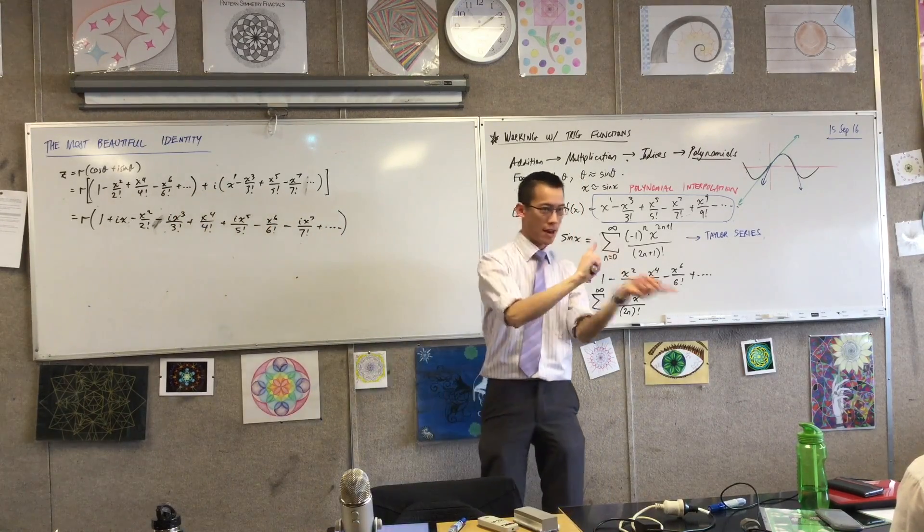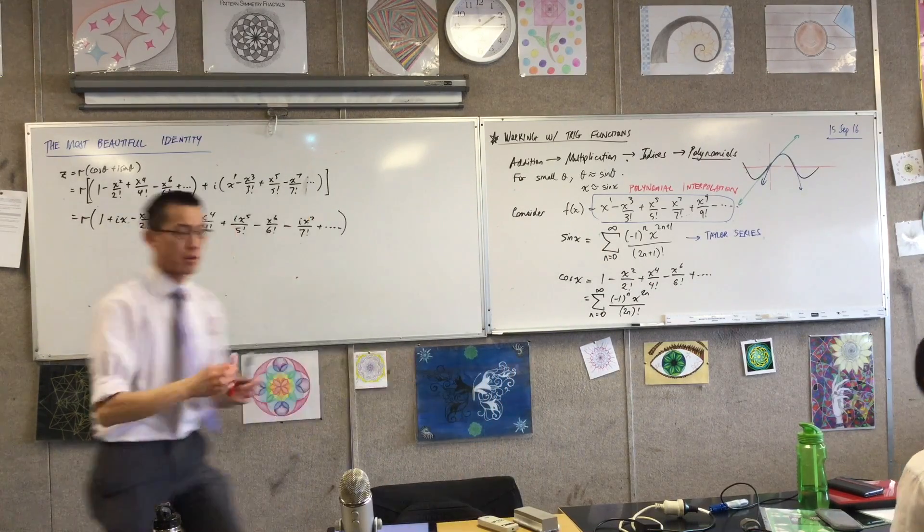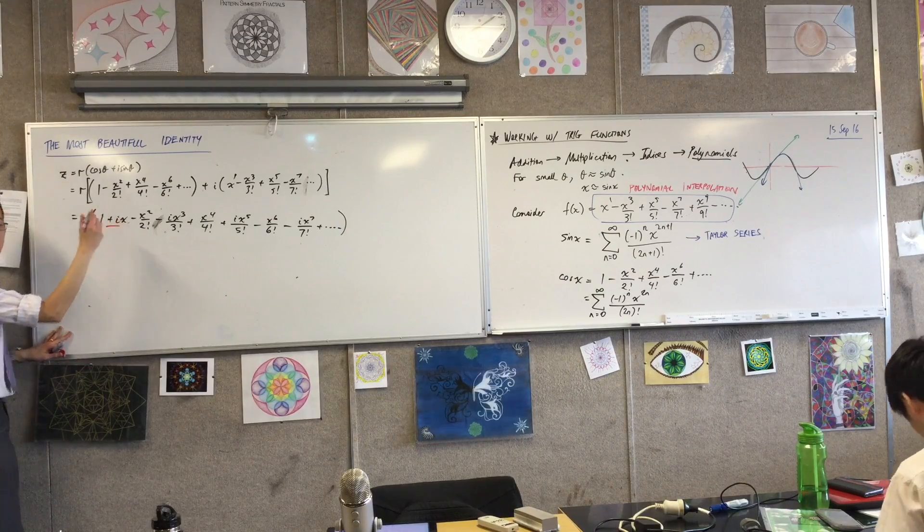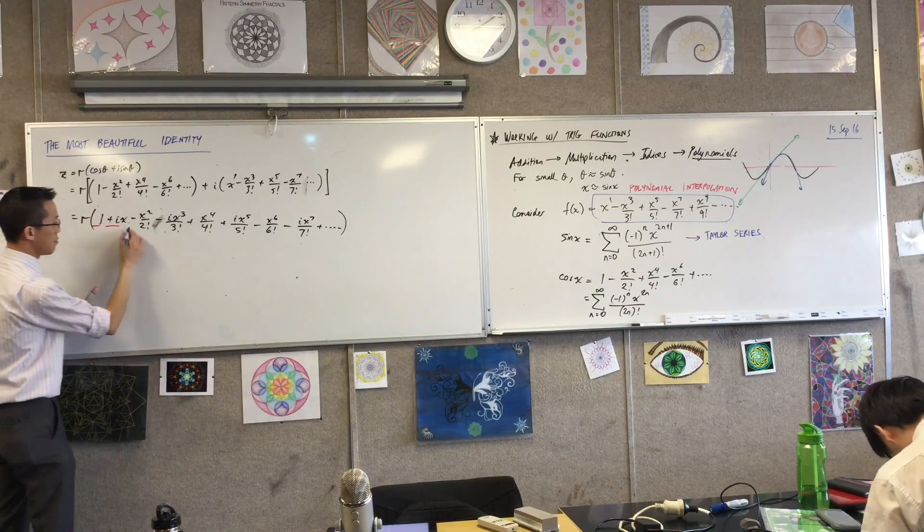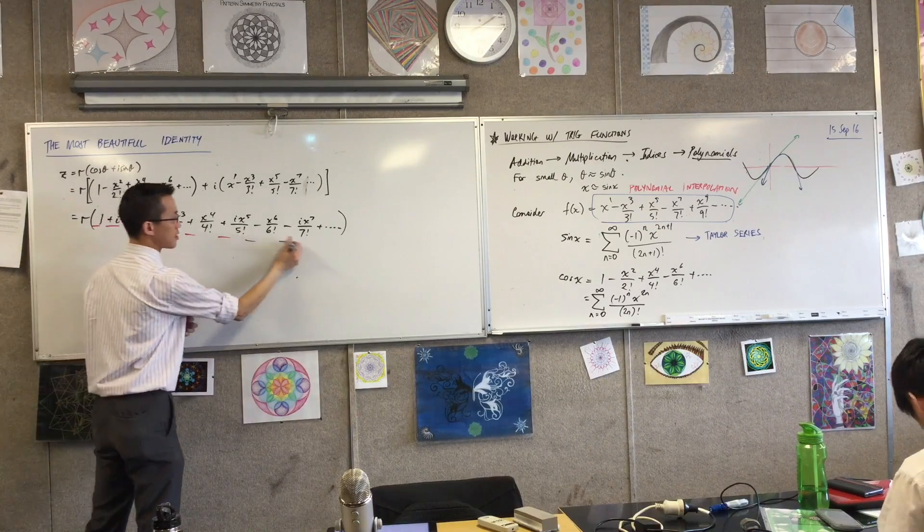Plus, minus, plus, minus, plus, minus. So when you put them together, have a look at the signs there. In fact, if you've got another colour, highlight this with me. Look at the signs you've got: plus, plus, and then minus, minus. And then you get another plus, plus, and then another minus, minus.